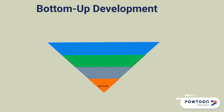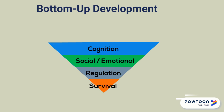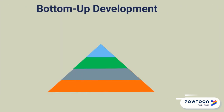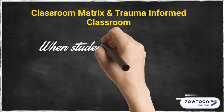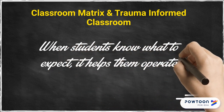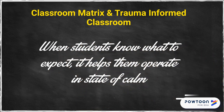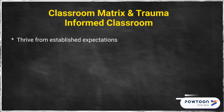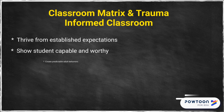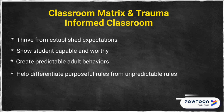In a typically developing brain, relatively little of the brain is devoted to survival and regulation, and much of the student's brain can be given over to learning. For a child in crisis, a relatively larger part of their brain is devoted to survival, and they may have few resources to give you for learning. By using a classroom matrix, you let kids who are experiencing trauma know what to expect and help them operate in a state of calm. All students — but students in trauma particularly — thrive when you establish expectations, show them they can be capable and worthy, create predictable adult behaviors, and help them differentiate purposeful rules from unpredictable ones. You establish a sense of security.